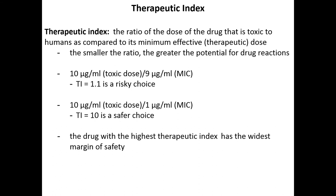The minimum inhibitory concentration is useful because you have to keep in mind the therapeutic index — the ratio of the dose of the drug that is toxic to us compared to its minimum effective therapeutic dosage. The smaller the ratio, the greater the potential for host cell toxicity. For example, with a toxic dose of 10 micrograms per mL: if the MIC is 9 micrograms per mL the therapeutic index is small and riskier; if the MIC is 1 microgram per mL the therapeutic index is much wider and safer. The wider the range, the higher the number, the safer the choice.